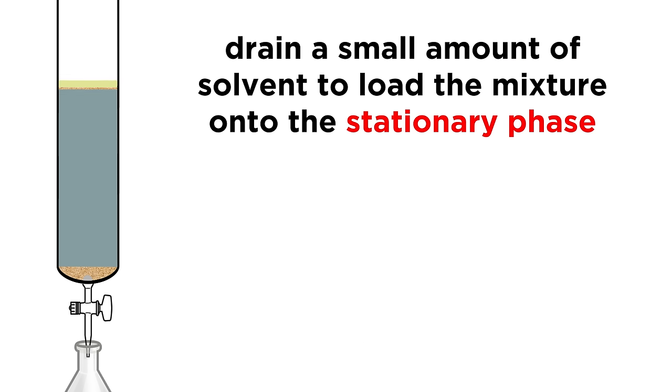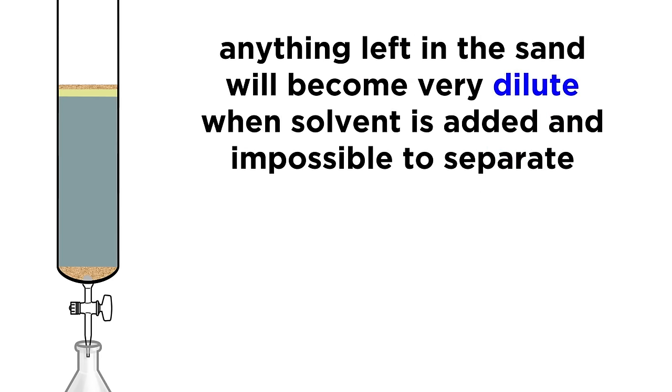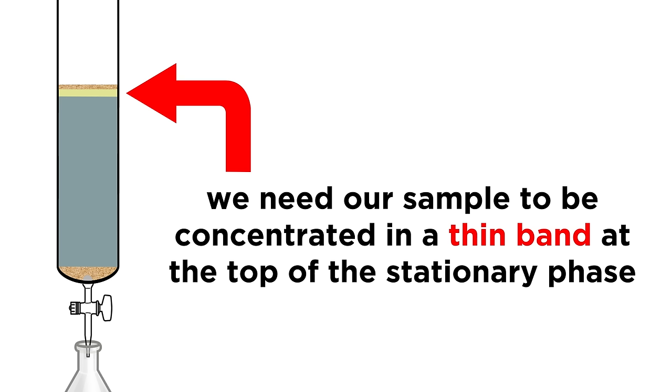We can then drain just a little bit of solvent, so that the mixture will move through the sand and just enter the stationary phase, so it sits just below the sand, in a nice even band. Make sure the solvent level lowers just enough that none of the mixture is left behind in the sand, or this part will not separate properly, as anything that is not loaded onto the stationary phase will become very dilute once solvent is added, and therefore impossible to separate. We need our sample to be very concentrated in a thin band at the top of the stationary phase for separation to work.